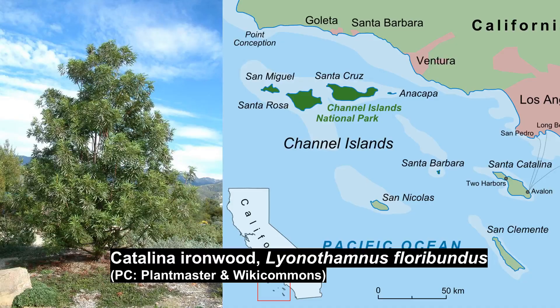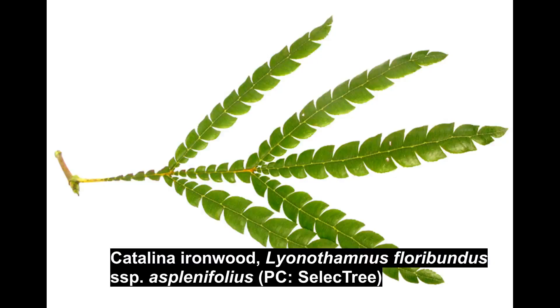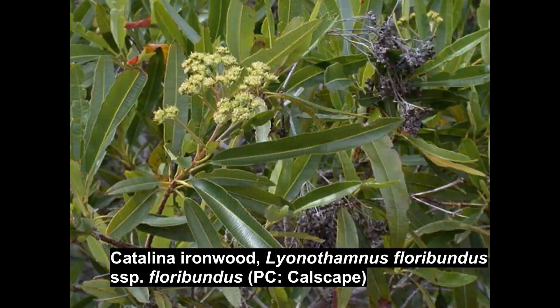An example is the Catalina ironwood, a tree species native to the Channel Islands off the coast of California. One subspecies, asplenifolius, is endemic to specific islands within the Channel Islands, while another subspecies is native to a different set of islands. They don't have the opportunity to breed in nature, but they are compatible.